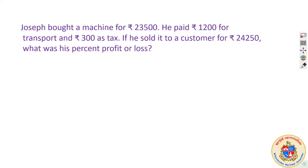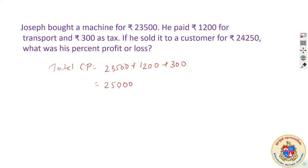We should find out the total cost price. We will add all these things: the cost of the machine, Rs. 23,500, plus transportation Rs. 1,200, plus Rs. 300 tax. Altogether it becomes Rs. 25,000. Joseph is in loss because he sold it at Rs. 24,250, which is unfortunately lesser than the cost price of Rs. 25,000.